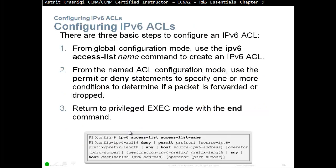There are three basic steps to configure an IPv6 ACL. From global configuration mode, use the 'ipv6 access-list' command and give it a name to create an IPv6 ACL. From the named ACL configuration mode, use permit or deny statements to specify conditions that determine if a packet is forwarded or dropped. Then return to privileged exec mode with the 'end' command.